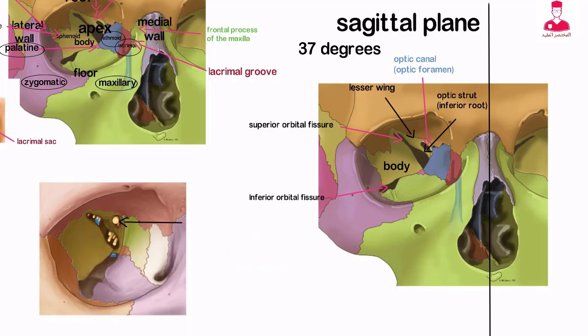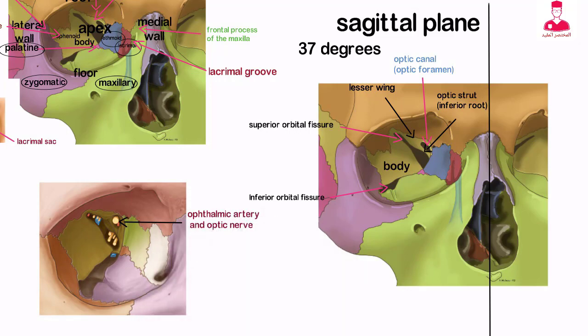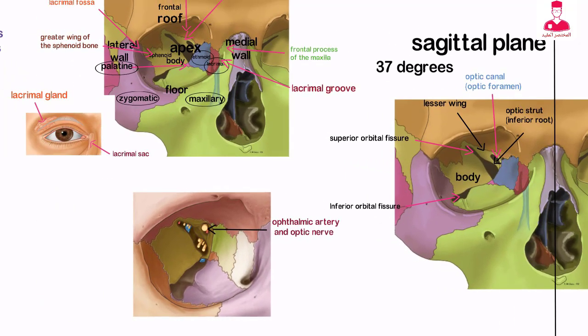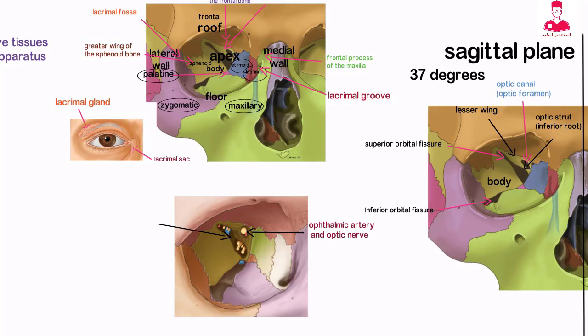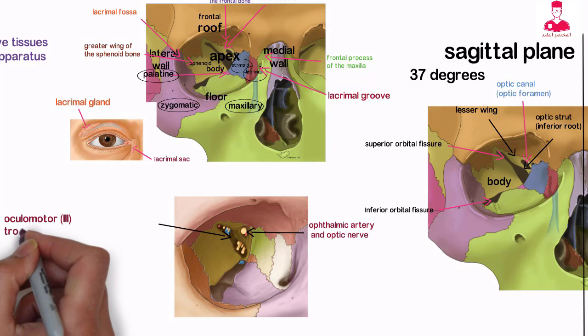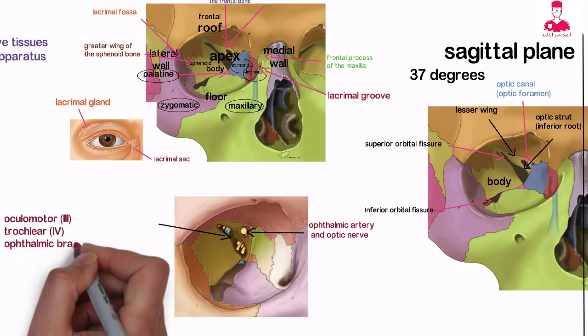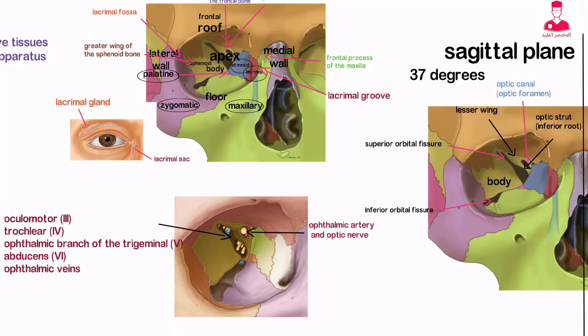Coursing through the optic canal are the ophthalmic artery and optic nerve. The superior orbital fissure, a triangular opening located between the greater and lesser wings of the sphenoid bone, allows the passage of cranial nerves: oculomotor, trochlear, the ophthalmic branch of the trigeminal nerve, and abducens, as well as the ophthalmic veins.